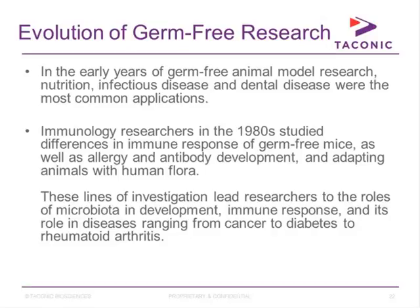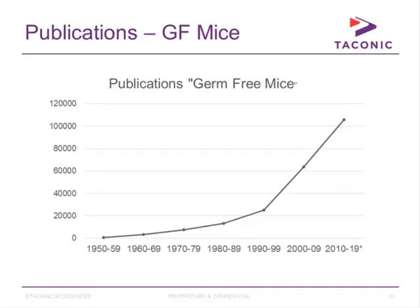In the early years of germ-free animal model research, the focus was nutrition, infectious disease, and dental disease. Starting in the 1980s, immunology researchers began studying differences in immune response of germ-free mice, allergy and antibody development, and adapting animals with human flora. These investigations led researchers to examine the roles of microbiota in development, immune response, and protection from diseases ranging from cancer to diabetes to rheumatoid arthritis. Since 2000, Google Scholar references for germ-free mice have been growing exponentially due to improvements in technology and growing interest in the microbiome.